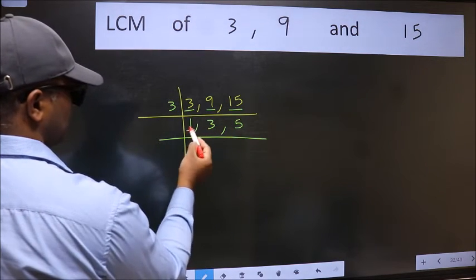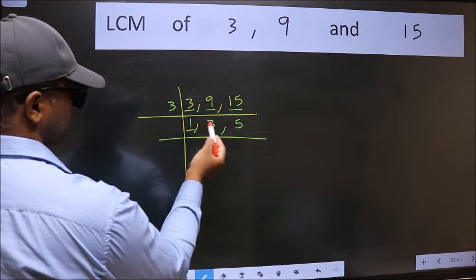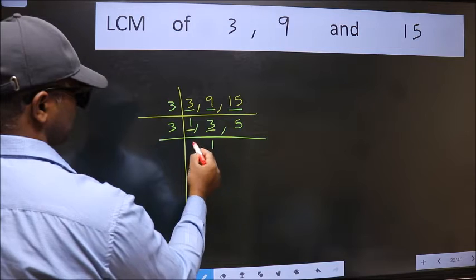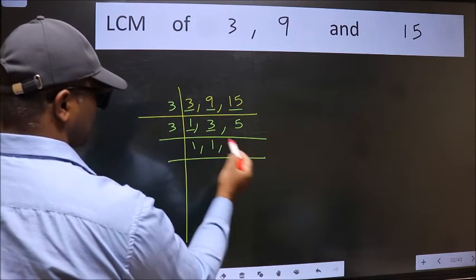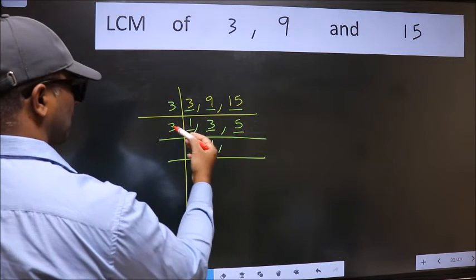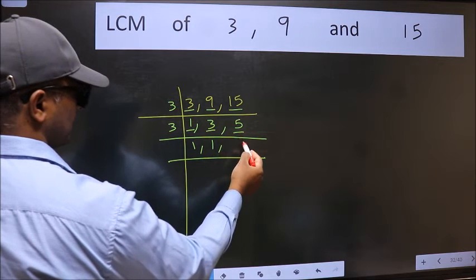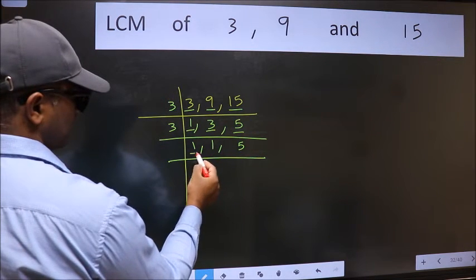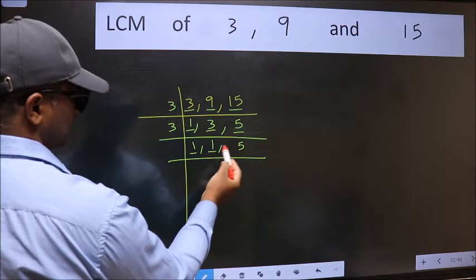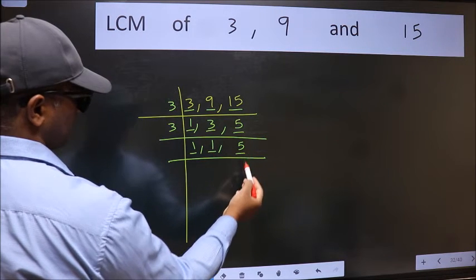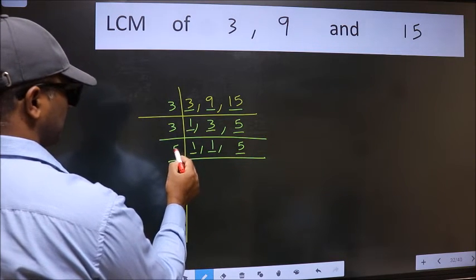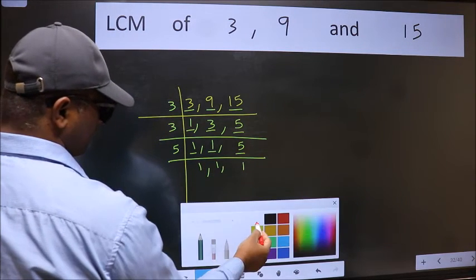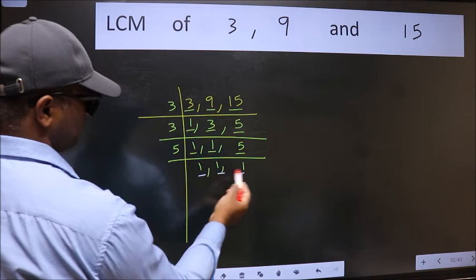Now we got 1 here. So focus on to the next number 3. 3 is a prime number, so 3 divides 3 once. The other number 5 is not divisible by 3, so we write it down as it is. Now we got 1 here and here. So focus on to the next number 5. 5 is a prime number, so 5 divides 5 once.